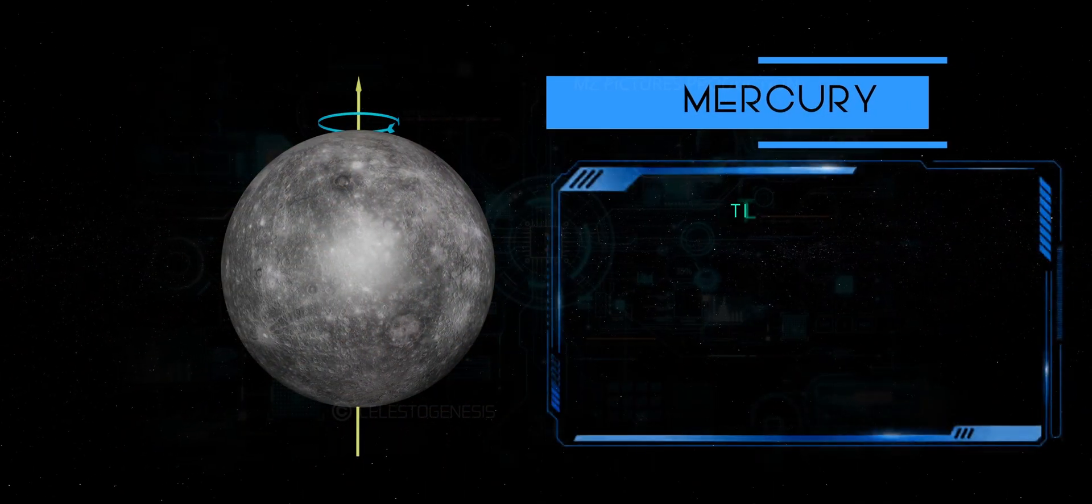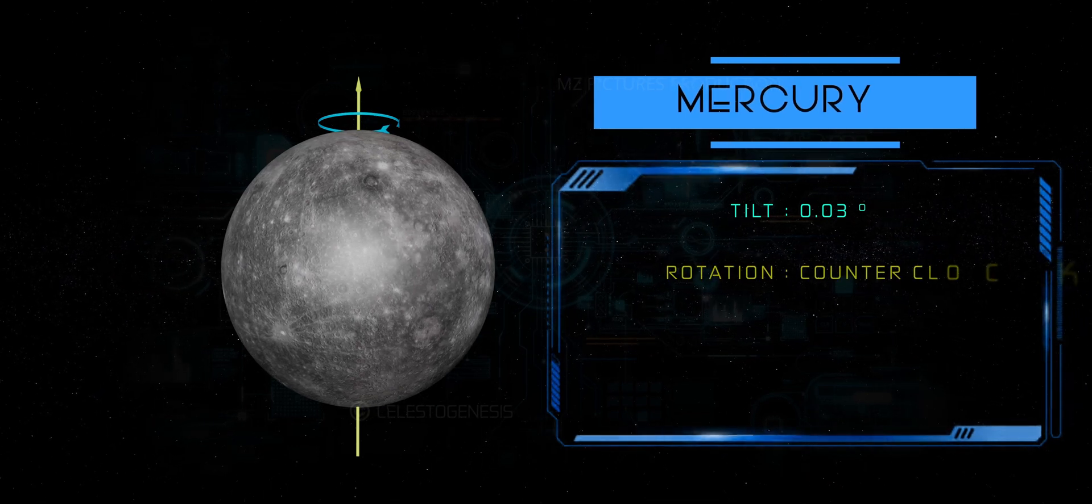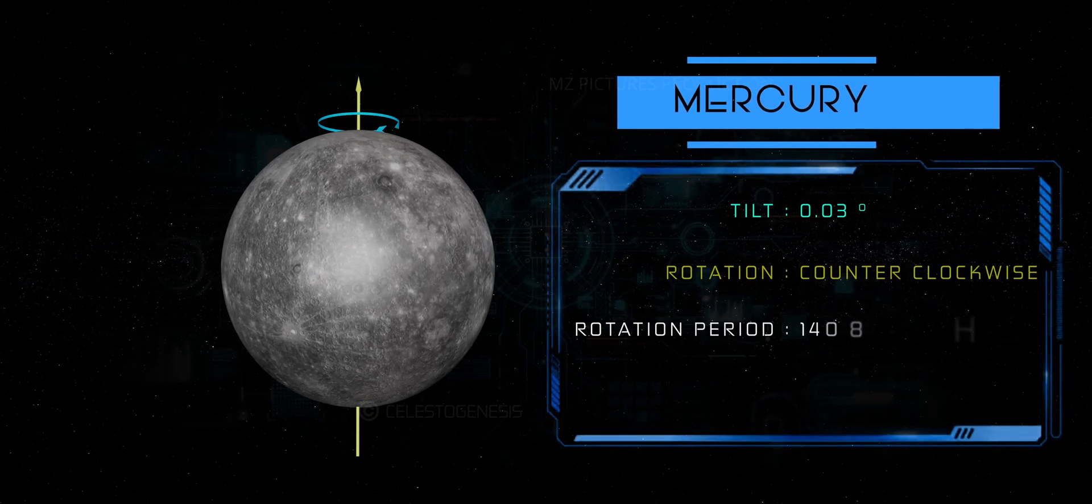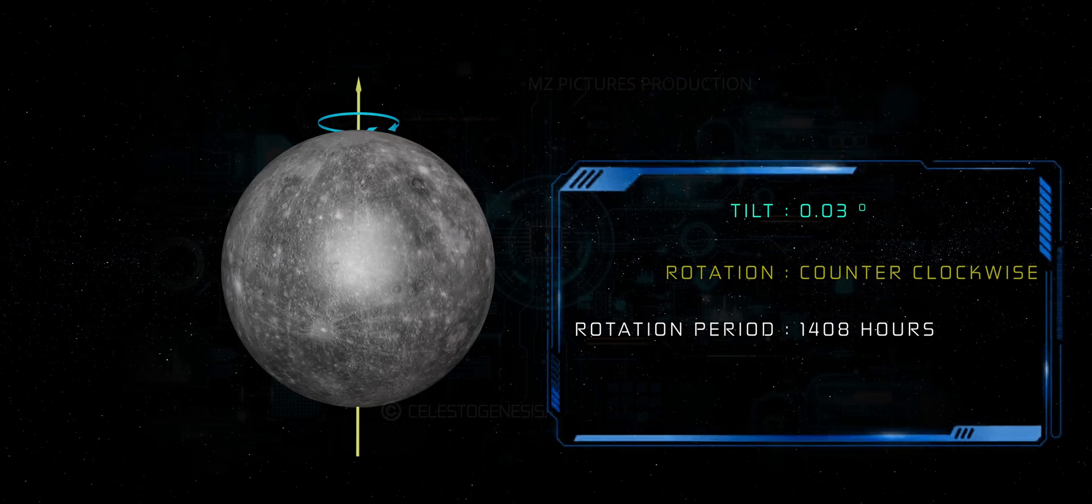Mercury. Mercury rotates very slowly, taking about 59 Earth days to complete one rotation. It has a nearly upright axis and rotates in a prograde direction, counterclockwise when viewed from above the north pole.